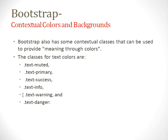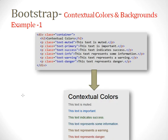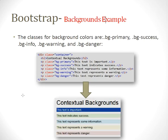Bootstrap also has contextual classes and background classes, such as .text-muted and .text-primary. For example, bg-primary is associated with a blue color, and other background color classes are also available under Bootstrap.